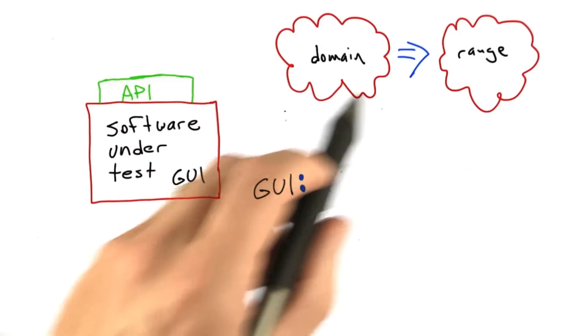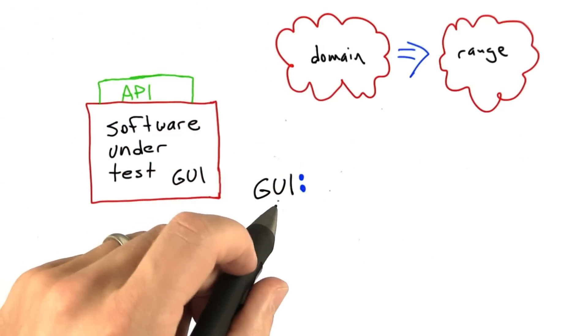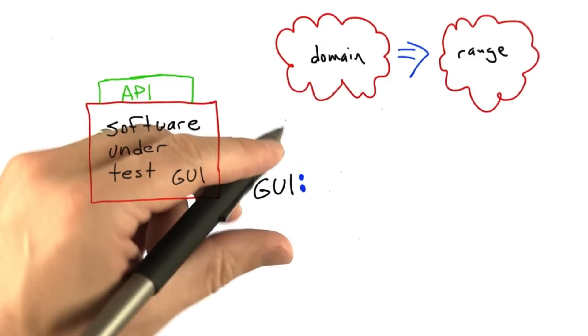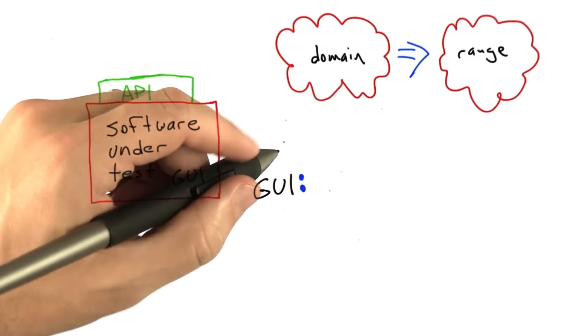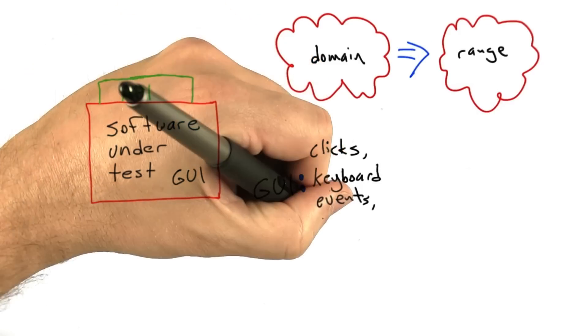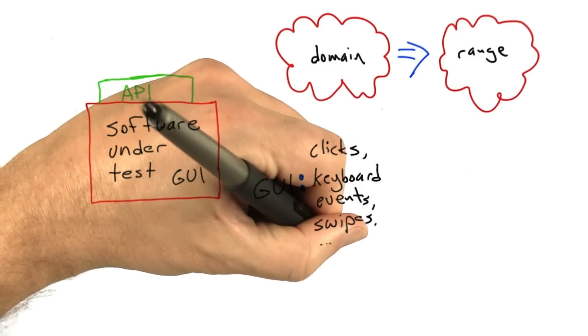And so we have to ask ourselves, what's the domain and range of a graphic user application? Well, the domain, that is to say, the set of legal inputs, is basically just going to be the set of all possible GUI actions. So mouse clicks, keyboard events, swipes, et cetera.